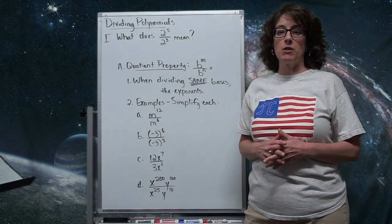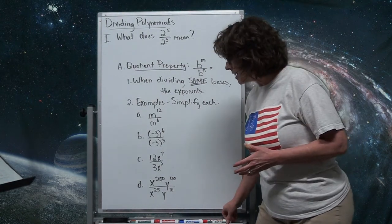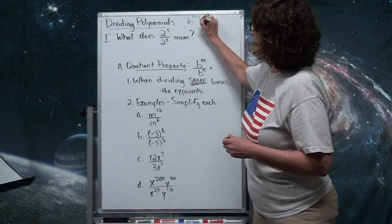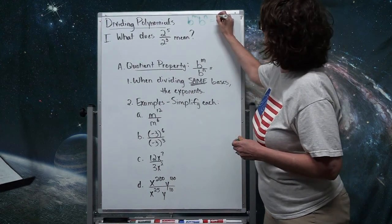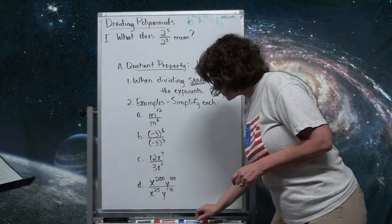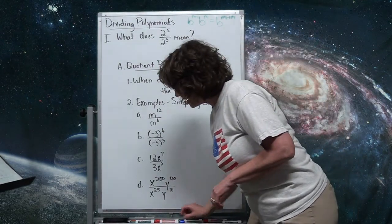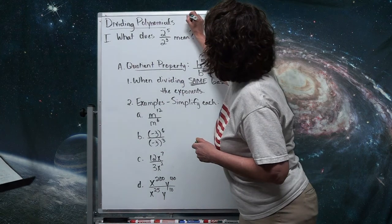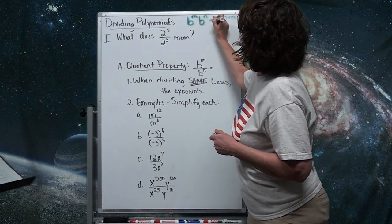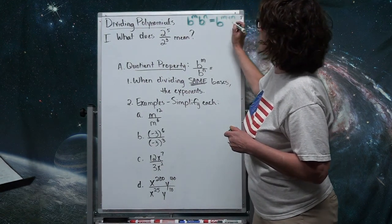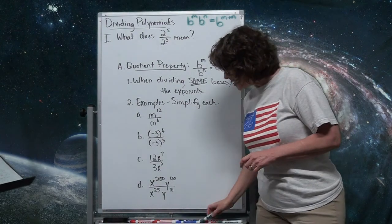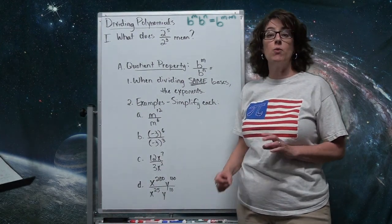We've looked at several laws of exponents, and one of the laws said that whenever you multiply bases and the bases are the same, you add those exponents. You keep the base, because it's all about the base, and you add up those exponents. So a·b to the m times a·b to the n results in a·b to the m plus n.